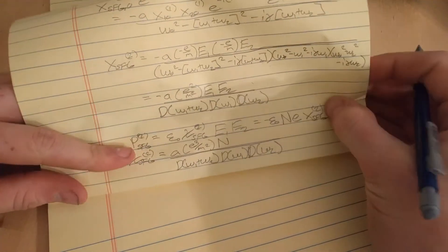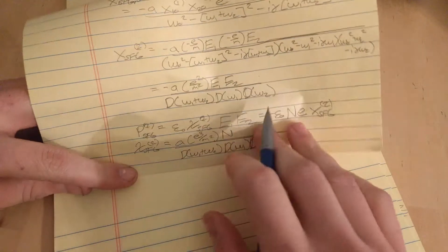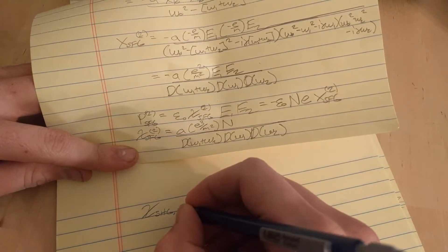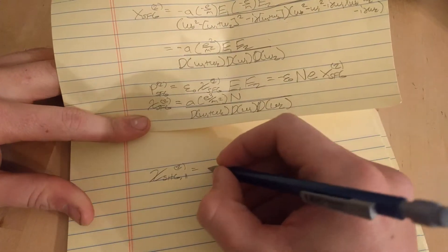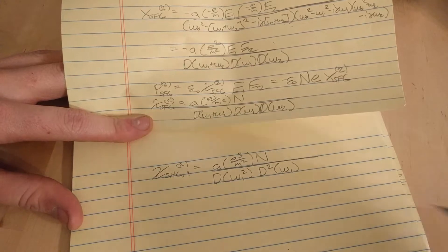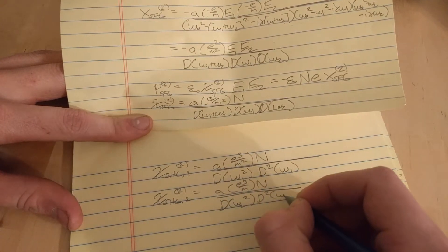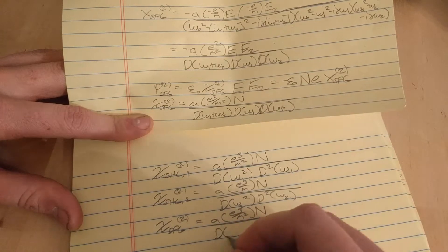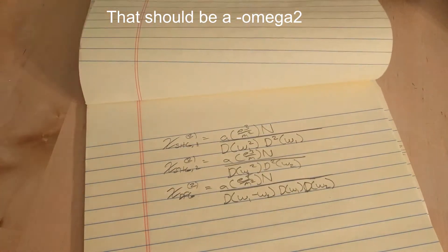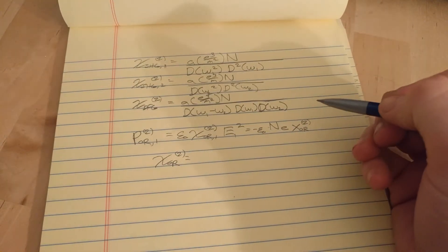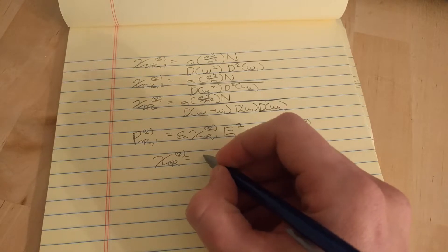Now I think you can guess the second harmonic generation χ's—I mean polarizations. But I'll give you the χ's. For the second harmonic generation of the first frequency, it's going to look like this. For the second frequency, and for DFG, and for the second frequency... Because I didn't want to go through it all again and I wanted to end this video—I'm sure you want this video to end too.